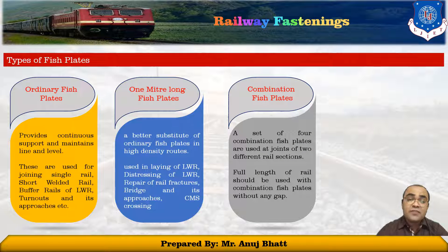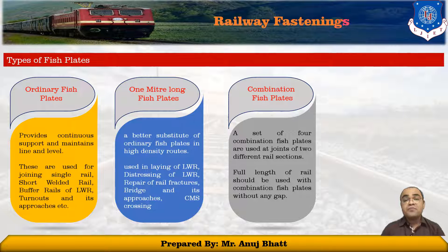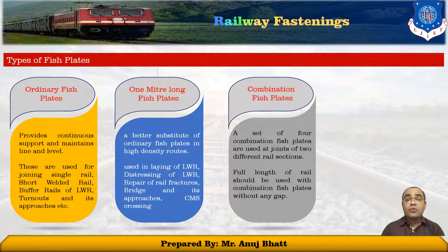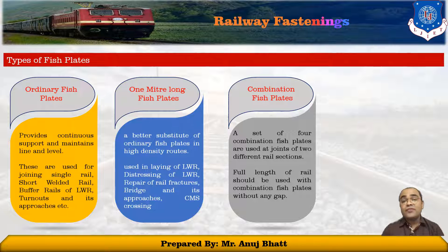The next type is the combination fish plate. A set of four combination fish plates are used at joints of two different rail sections. These combination fish plates are different from each other and are marked as IR or IL and OL, indicating right-in, right-left fish plate, and left-out fish plates. They are fixed apart from their part numbers and rail sections. Full length of the rail should be used with combination fish plates without providing any gap between the rails.